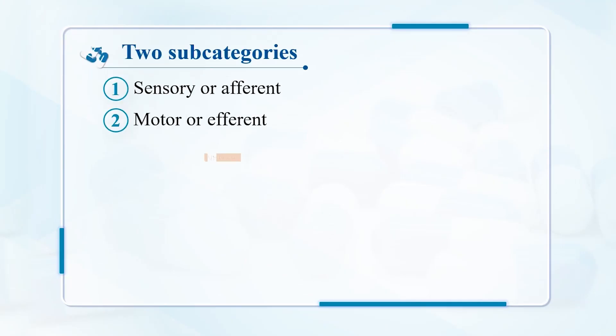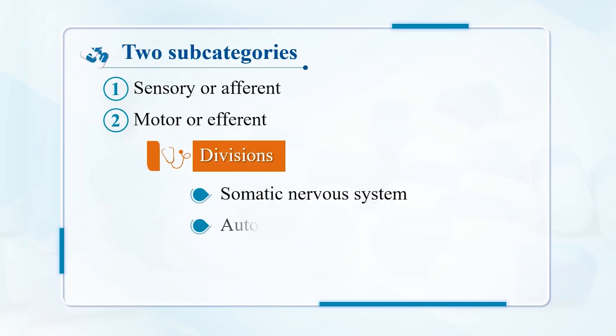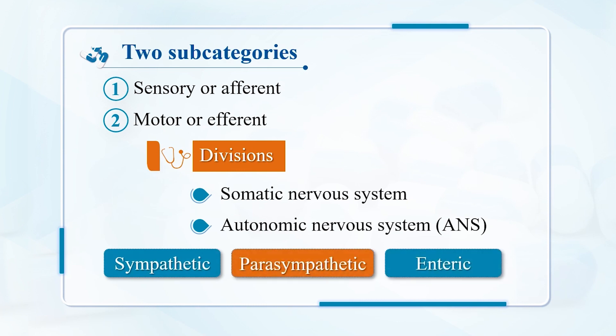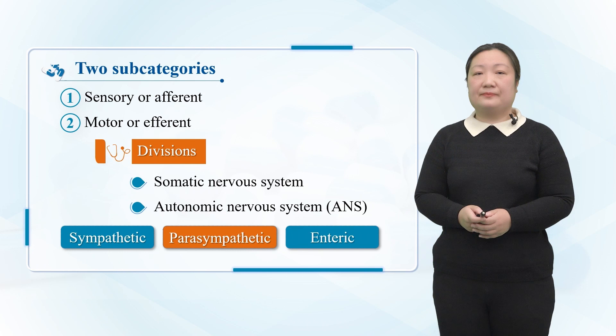From the functional point of view, the nervous system can be divided into three links, namely the incoming, the center, and the efferent.